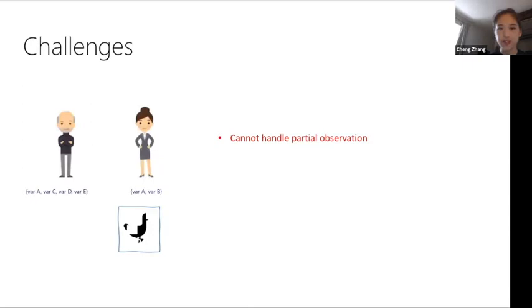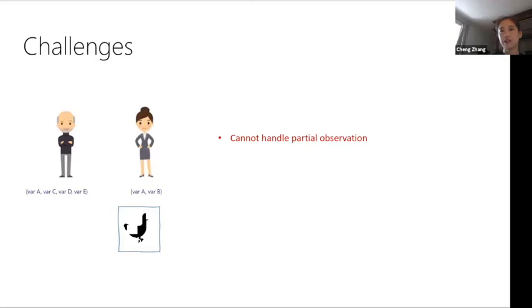The challenge is that standard VAE cannot handle partial observations, because in healthcare settings, different patients may have different medical tests. Patient one may have variables A, C, B, E measured, and patient two may have only A and B. The encoder cannot handle such partial observation — what is observed is never complete.